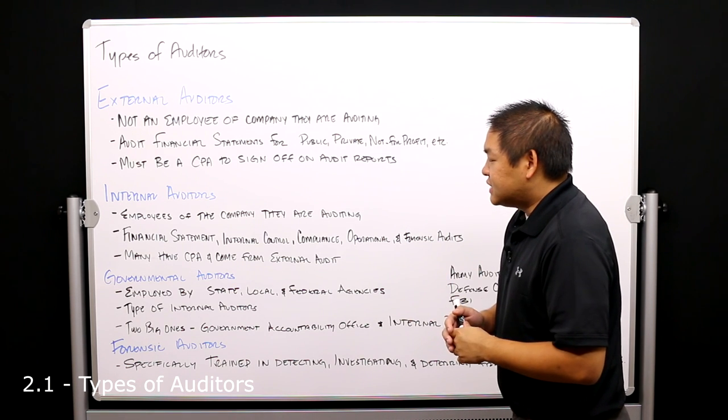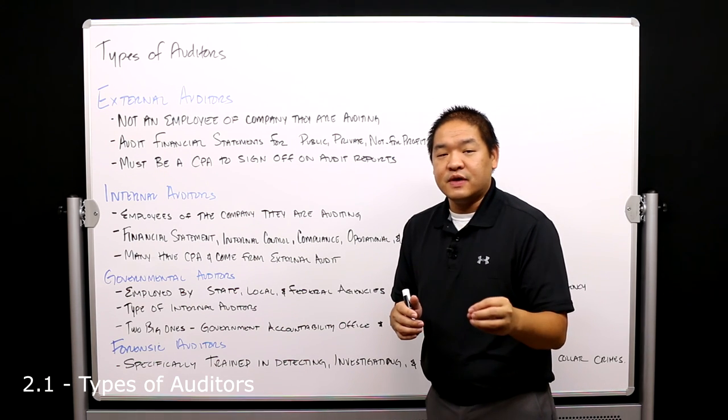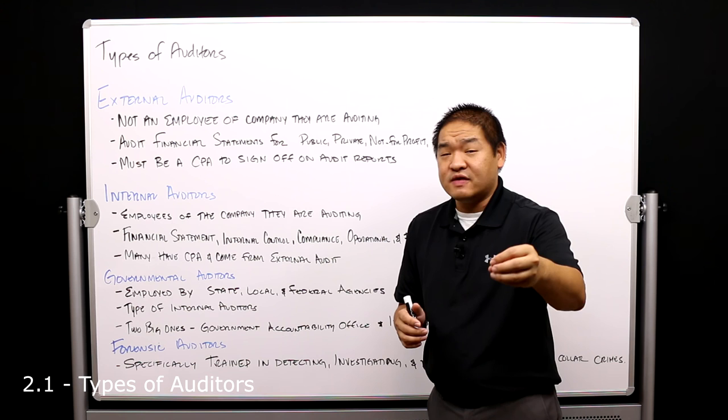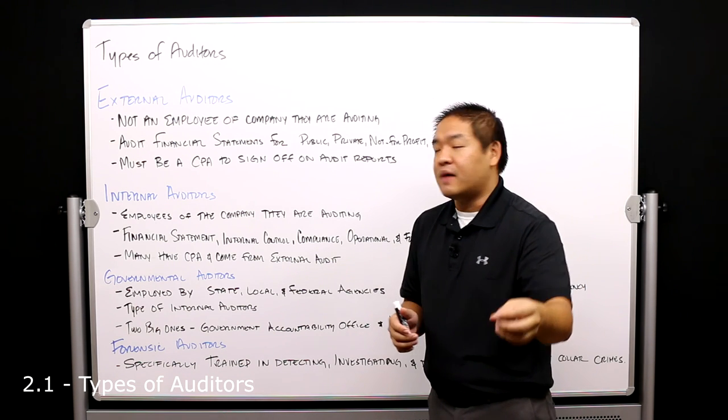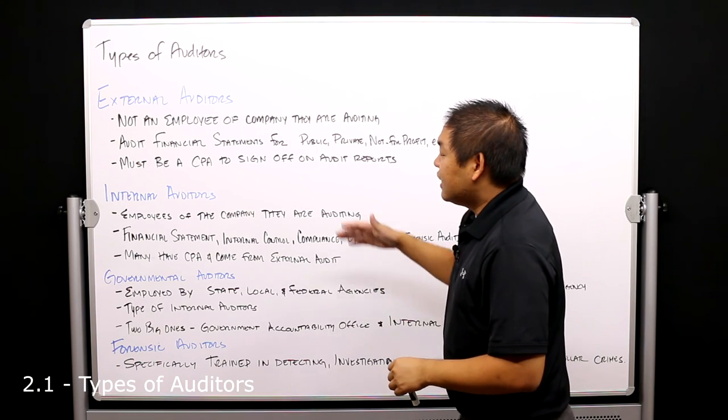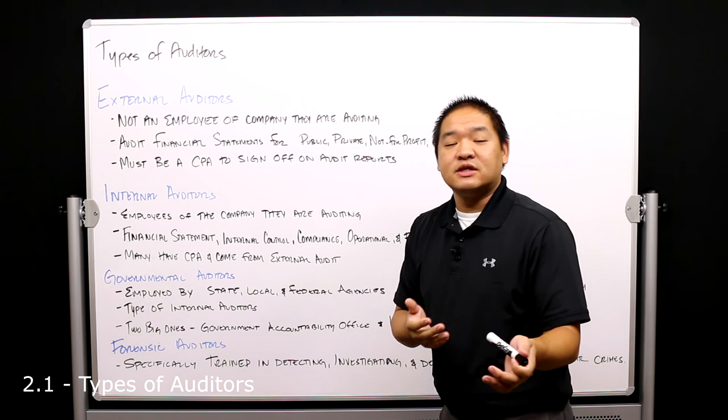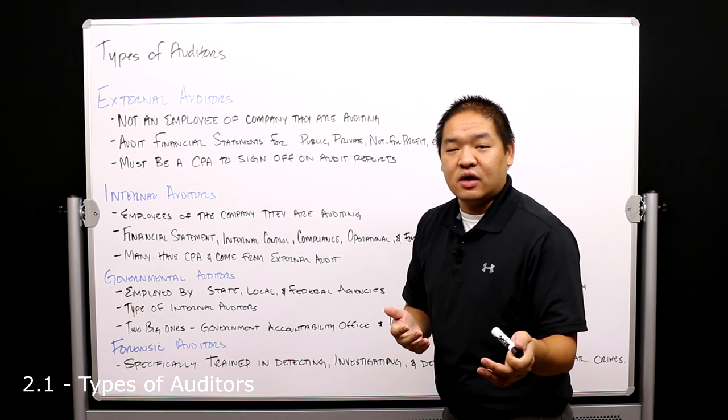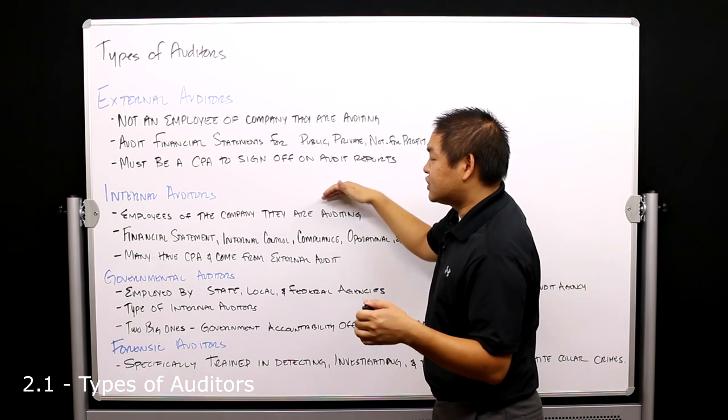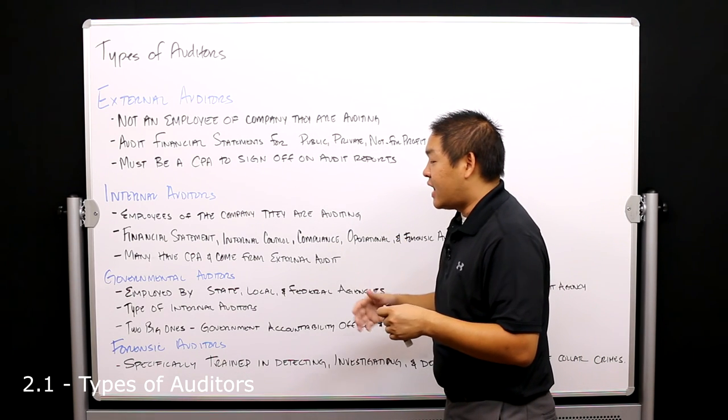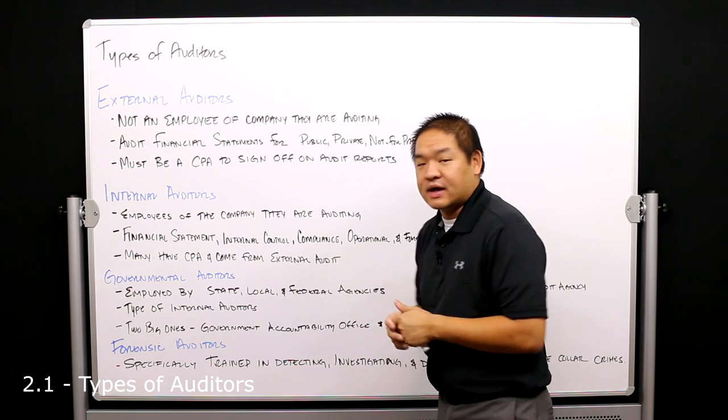Now internal auditors do not necessarily have to have a CPA, but most of them do have a CPA or a lot of them do have a CPA. The reason why they have their CPA comes down to where they're coming from. A lot of times we see internal auditors start as external auditors, which would make sense because you get a lot of training in external auditing, and when you have that training you can then apply that to internal auditing. So we see a lot of those internal auditors have a CPA license and they come from external audit.